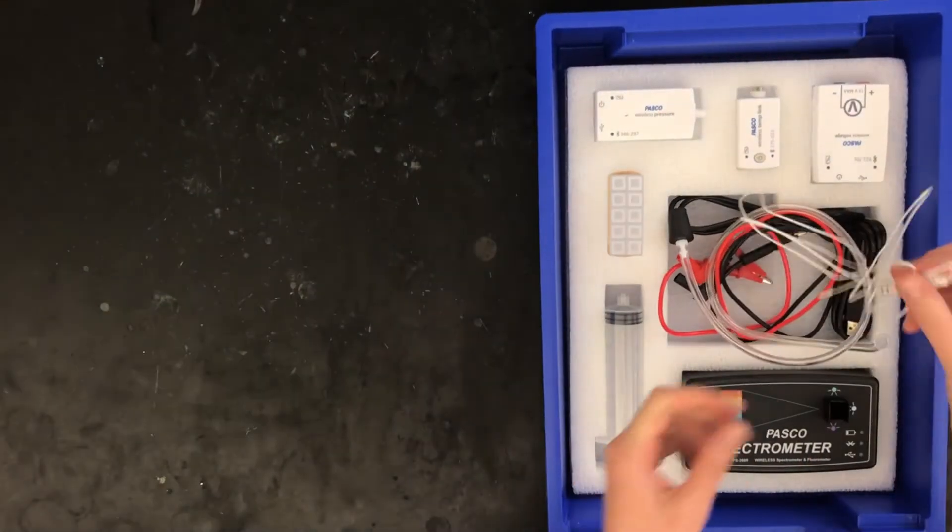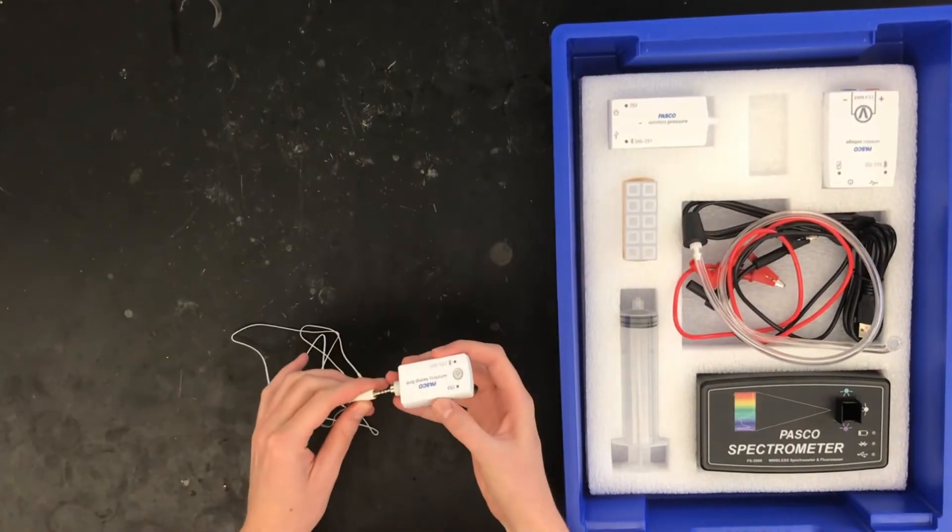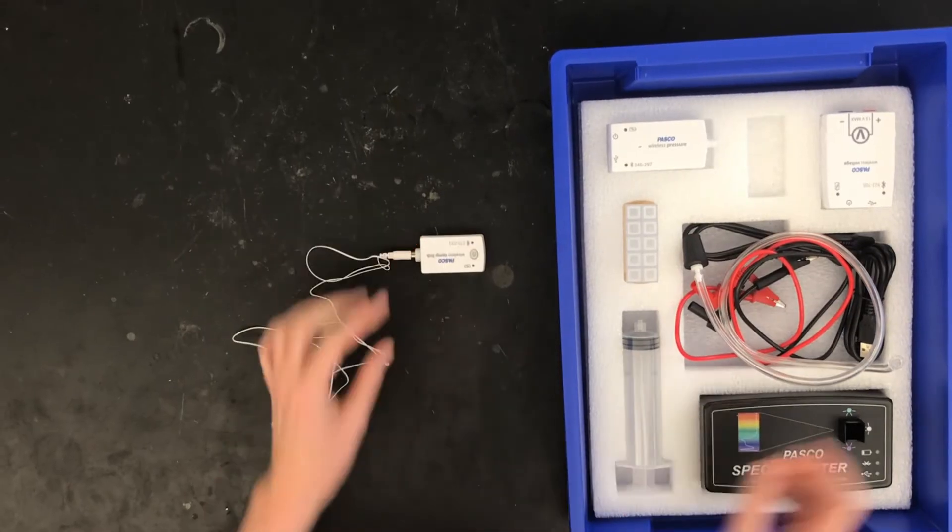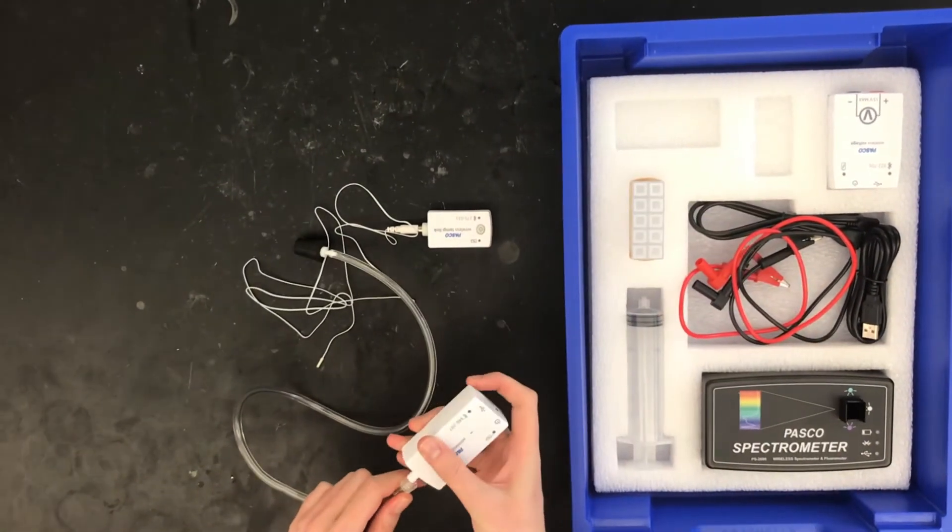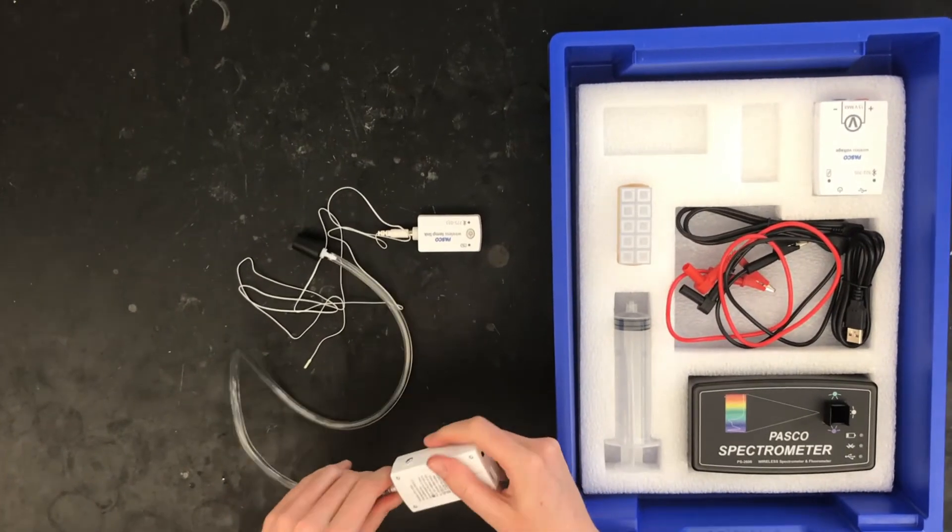Today you'll be using the temperature and pressure sensors. Get out the temperature sensor that looks like a white shoelace and plug it into the wireless temperature link. Then plug in the pressure sensor to the wireless pressure link.